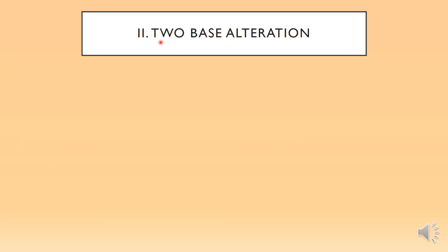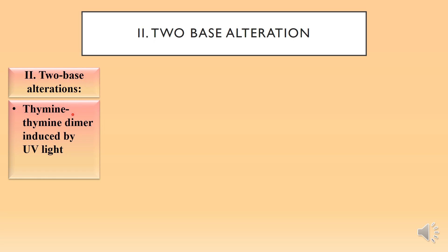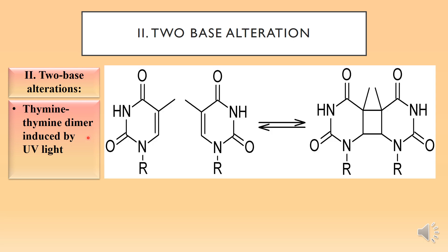Now we come to two base alteration. In two base alteration, there are thymine-thymine dimers induced by UV light. The two thymine bases dimerize at the methyl group position, forming a thymine-thymine dimer in the presence of UV light.